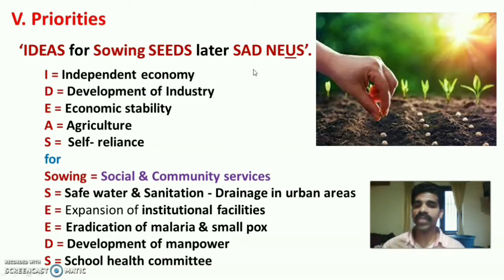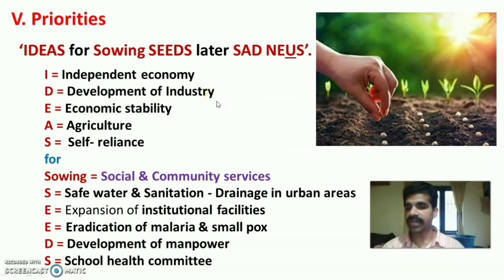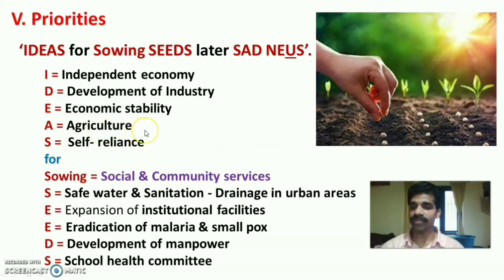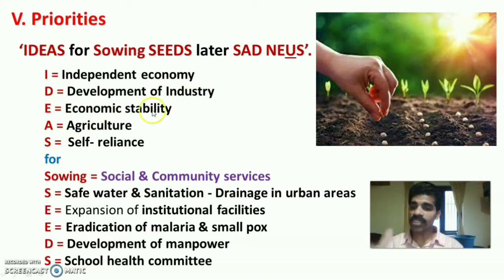Expanding the mnemonic IDEAS: I stands for Independent Economy, D stands for Development of Industry, E stands for Economic Stability, A stands for Agriculture — continued production of wheat — and S stands for Self-Reliance, meaning maximum production of wheat for economic stability. These are the first five priorities of the first part of the Third Five-Year Plan.